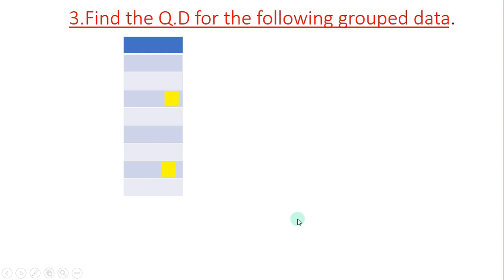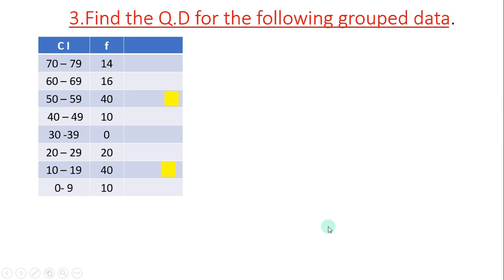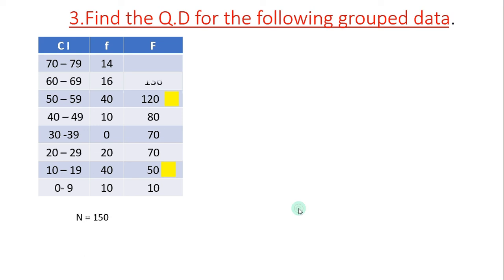This is ungrouped data. Now let us find how to calculate quartile deviation for grouped data. The class intervals given are 70-79, 60-69, 50-59, 40-49, 30-39, 20-29, 10-19, with frequencies 14, 16, 40, 10, 0, 20, 40, 10. Since this is in decreasing order, cumulative frequency is calculated from the bottom: 10, 50, 70, 70, 80, 120, 136, 150.